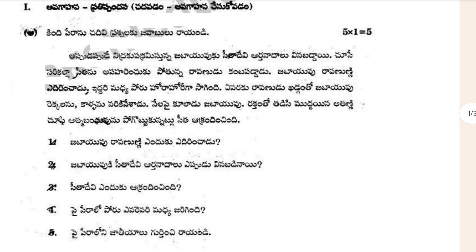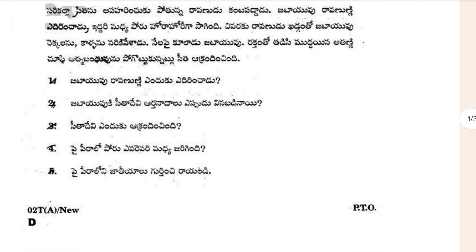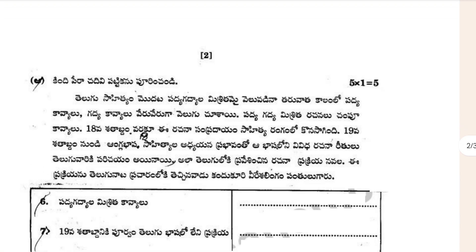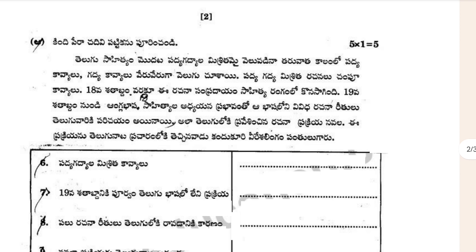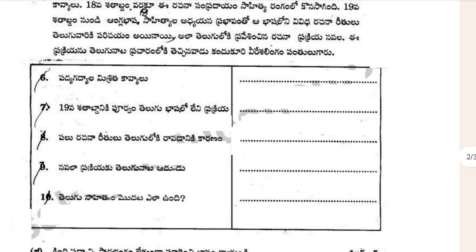Five questions are given which contain one mark each, so five into one equals five marks. Similarly in the next section, five questions are given each containing one mark, so five questions make five marks total.